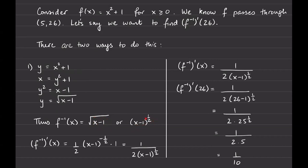Just to remind us of what we're looking for — we want the derivative of the inverse function at a particular point. We've found the inverse function, so now we can differentiate it. The derivative of (x − 1)^(1/2) uses the chain rule: bring down the power, subtract 1 from the exponent, keep the inside the same, times the derivative of the inside, which is 1. This gives (1/2)(x − 1)^(−1/2), or equivalently 1 over 2(x − 1)^(1/2).